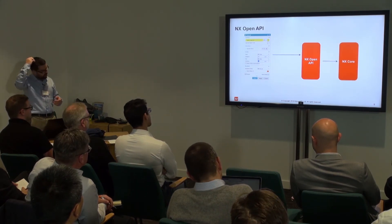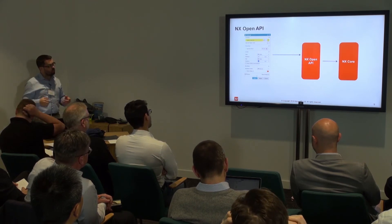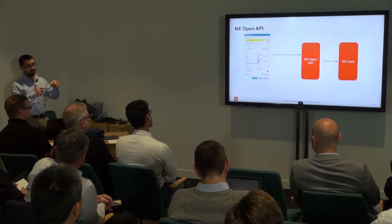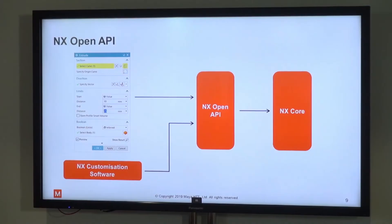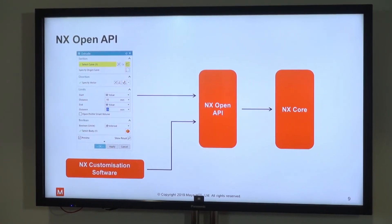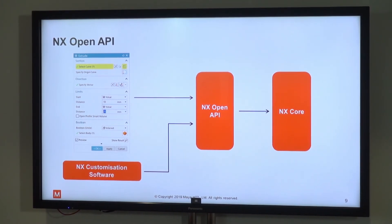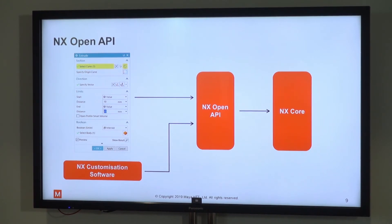That NX core architecture allows us to write custom software that also hooks into the NX Open API and behaves exactly the same way as a regular dialog in NX would. It's a really neat piece of technology — very useful, and it provides ample opportunities to do very nice things. There aren't very many disadvantages to using the NX Open API.